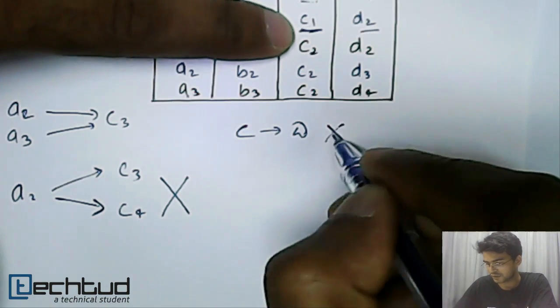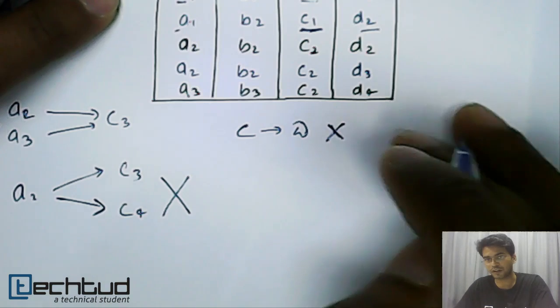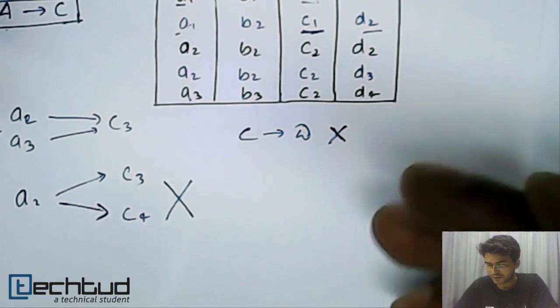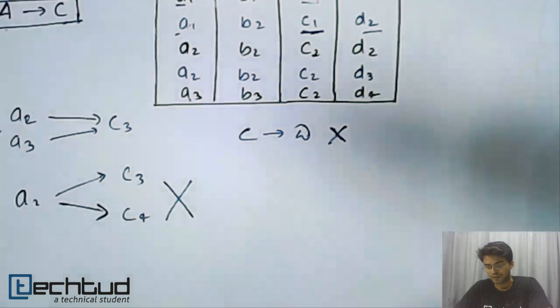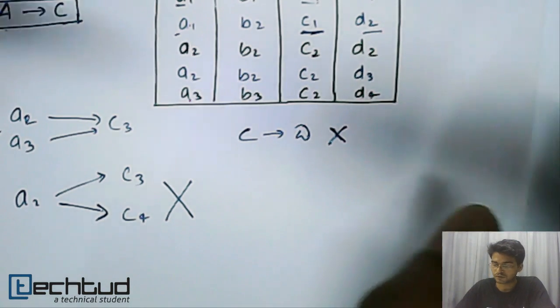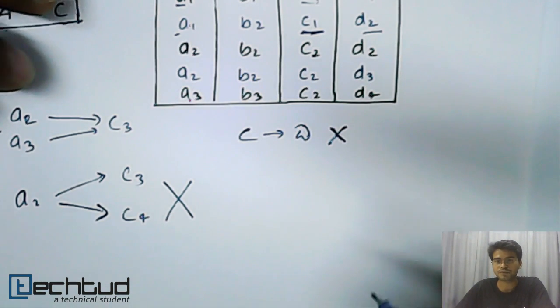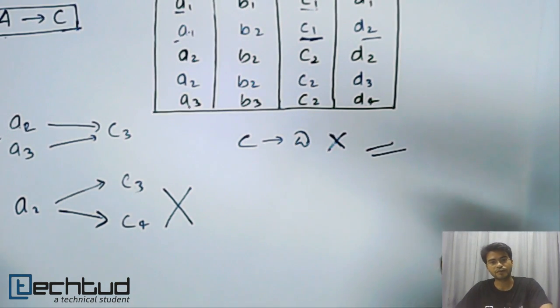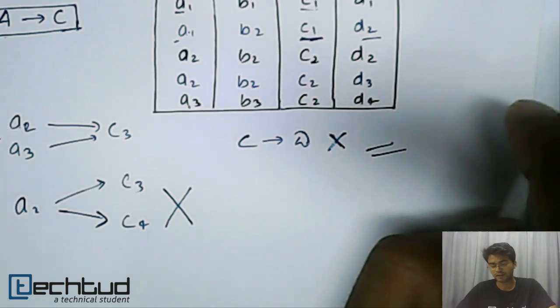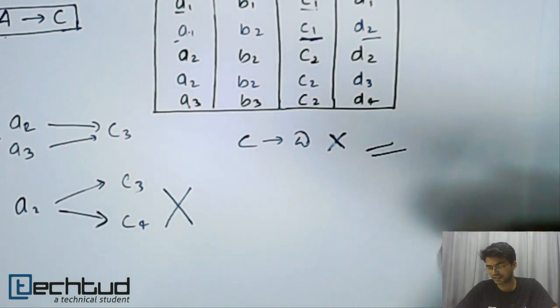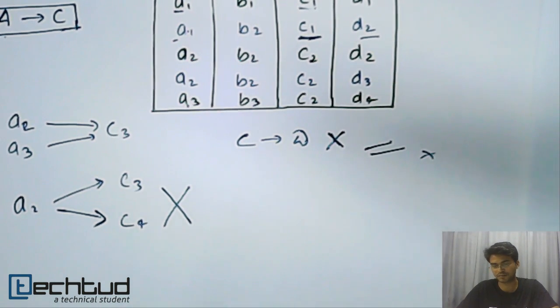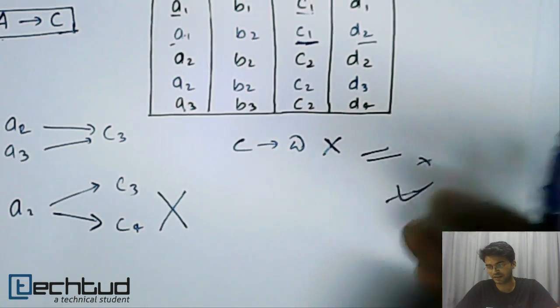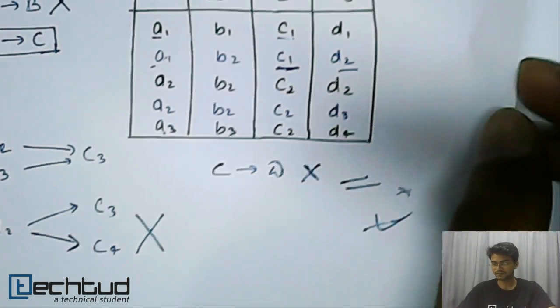This doesn't satisfy our condition and this is wrong. Similarly we will go and we will check for all the possibilities. Now the question is if we try to construct all the possibilities, there will be a lot of functional dependencies and we will have to check for them. So the best thing is to start with the options. Whatever four options you have been given, you start with them and keep on discarding the options that are not possible. Likewise you can solve problems on functional dependency. I hope this is clear. Thanks for watching.